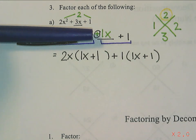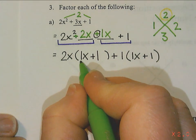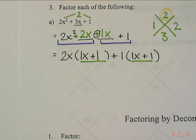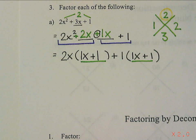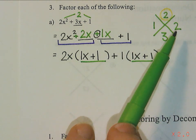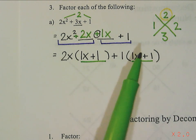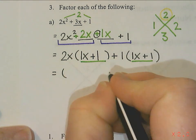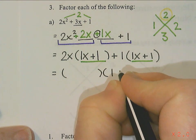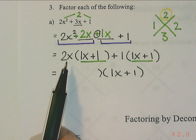Now at this step these two brackets need to be the same. So I have 1x + 1 and 1x + 1. If they're not the same we've done something wrong, so either we didn't find the right numbers or we made a mistake when we were doing our factoring there. So if these two things are the same, that means that my original multiplication question was something times 1x + 1.